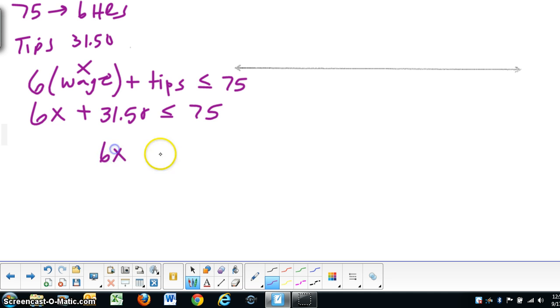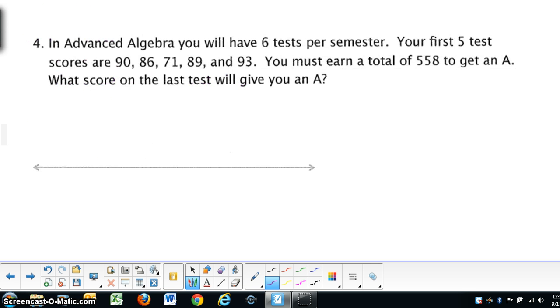And hopefully you have 6x less than or equal to 43.5. And then x is less than or equal to $7.25. So in order for this person to have $75, it would be 7.5 here on the graph. Closed in and to the left. So she could earn that wage in order to get less than $75. Okay. Now, on the next one.